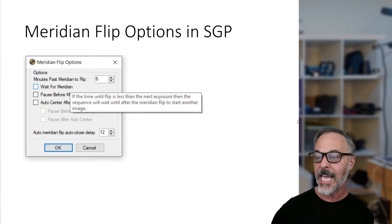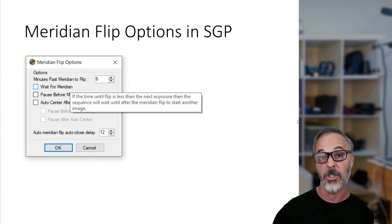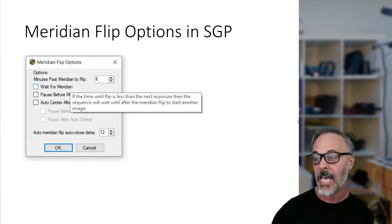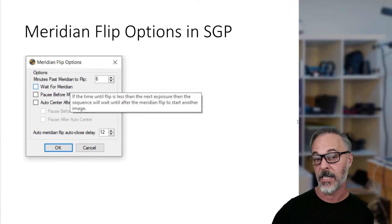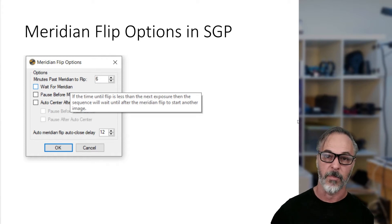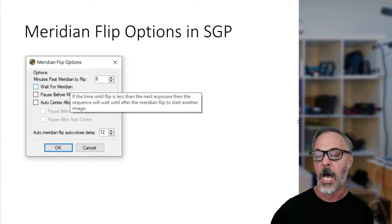The second option is 'Wait for Meridian.' It says: if the time until the flip is less than the next exposure time, the sequence will go into a wait mode and count down until it hits the request range, then execute the flip. Normally you won't need to worry about this if you have enough of an allowable range and your exposure times are relatively short — 10 minutes or less. I'm going to go through an example where this option becomes important in just a moment.